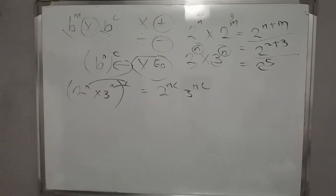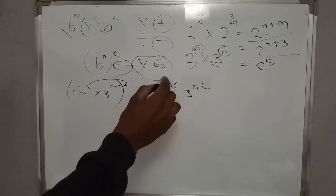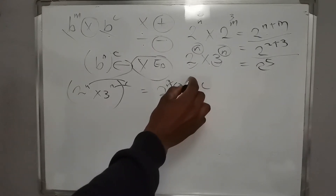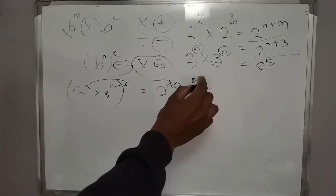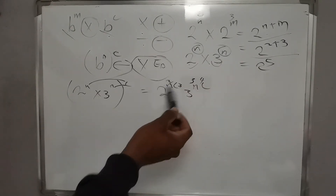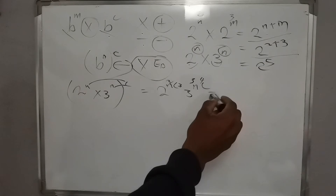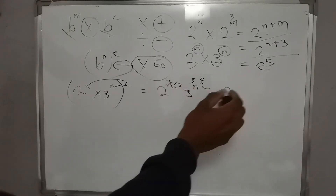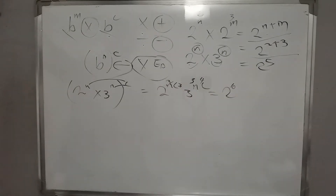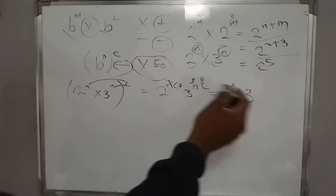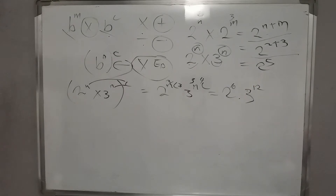If n was 2 and c was 3, or n was 3 and c was 4, we would get 2 times 3 giving us 2 raised to exponent 6, and 3 raised to exponent 12 as a numerical example.